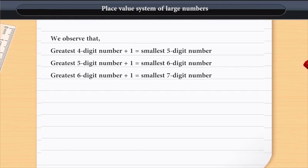We observe that the greatest four-digit number plus 1 is equal to the smallest five-digit number. The greatest five-digit number plus 1 is equal to the smallest six-digit number. The greatest six-digit number plus 1 is equal to the smallest seven-digit number.